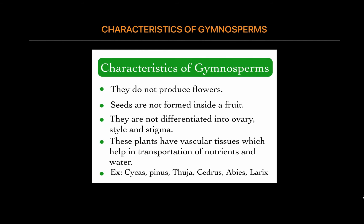The reproductive system of gymnosperm plants is located in the cones. The male gametophytes produce two gametes, but only one of them is functional. They are not differentiated into the ovary, style, and stigma.